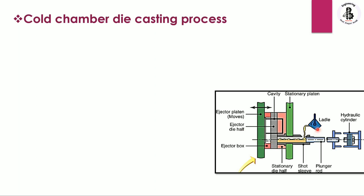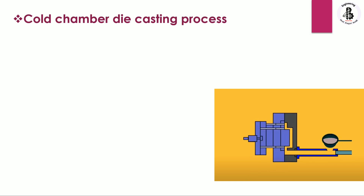After filling the molten metal with the help of the ladle, pressure is exerted with the hydraulic cylinder. The molten metal travels through and fills the cavity. This cavity is shaped as per the required shape and size of the component. You can also see an animated view for better understanding of the cold chamber die casting process.